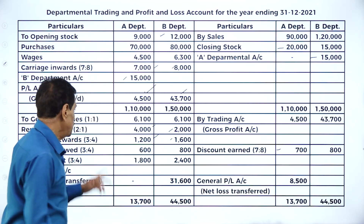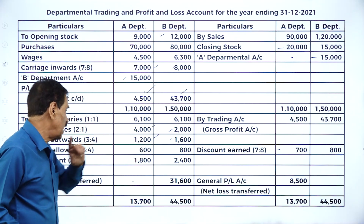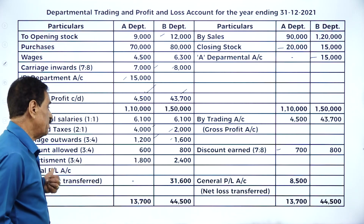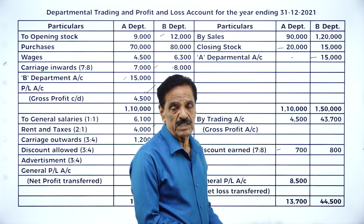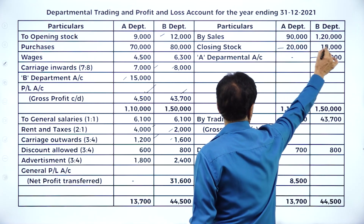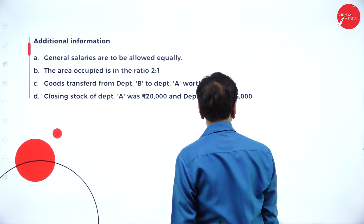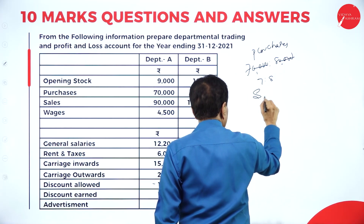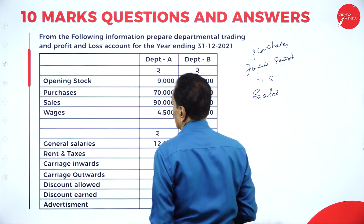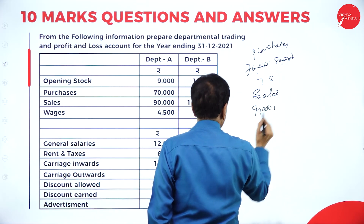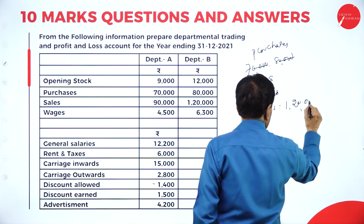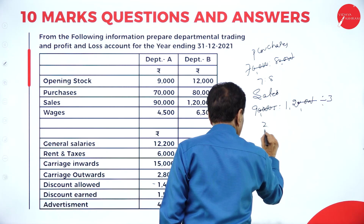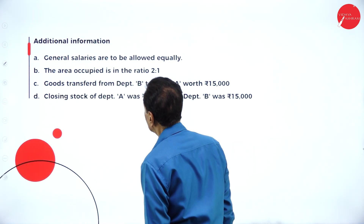To summarize the bases: salary equally distributed, rent based on area, carriage outward based on sales, discount allowed based on sales, advertisement on sales, discount earned on purchases. Sales are 90,000 and 1,20,000 — cancelling zeros: 9 and 12, divided by 3 gives 3 and 4. So they are in the ratio of 3:4.